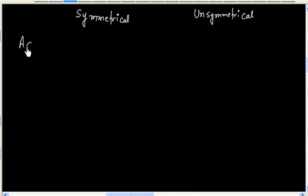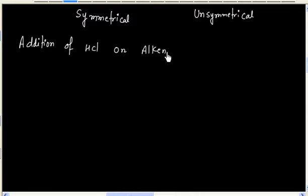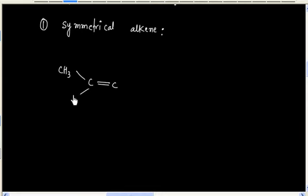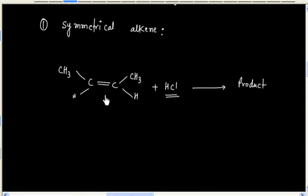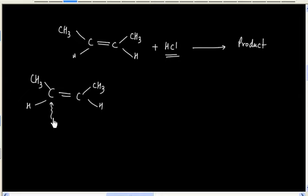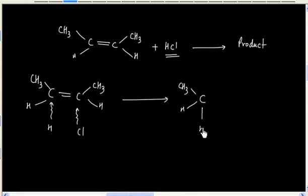Now let us consider addition of HCl on alkene. First we will consider the case of symmetrical alkene. For example, let us say we have this reaction. What will be the product? In this reaction we have to add HCl over the double bond. So let us say we add hydrogen to this carbon and chlorine to this carbon. So we will have this product.